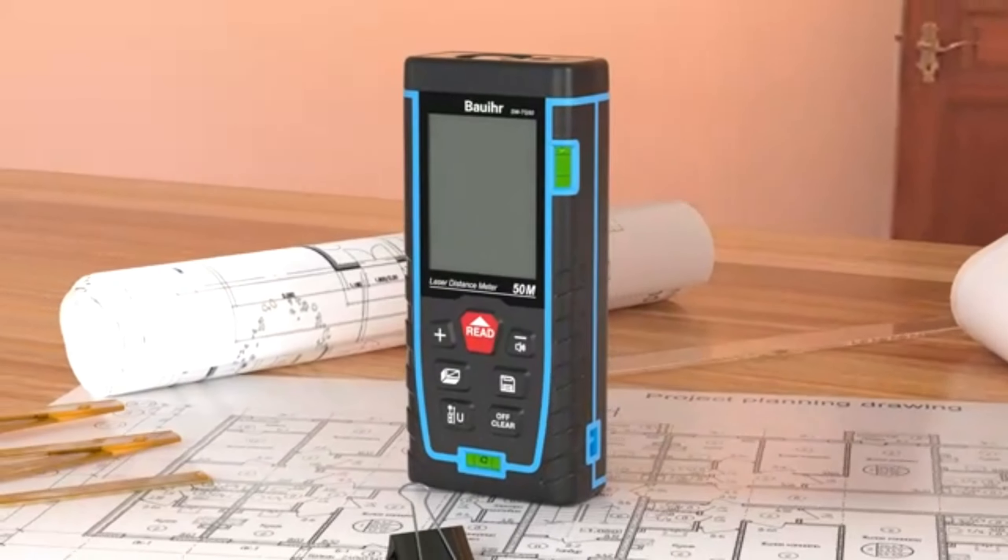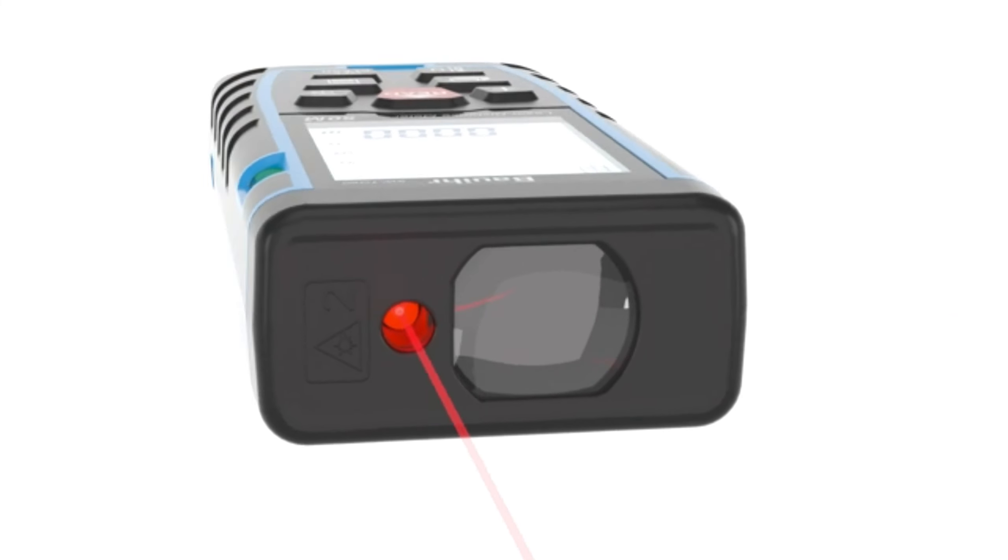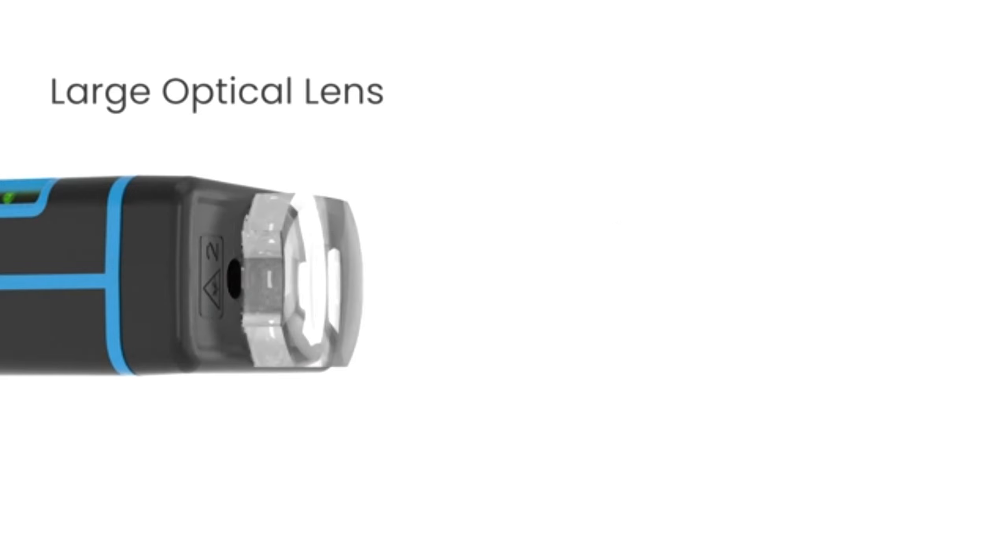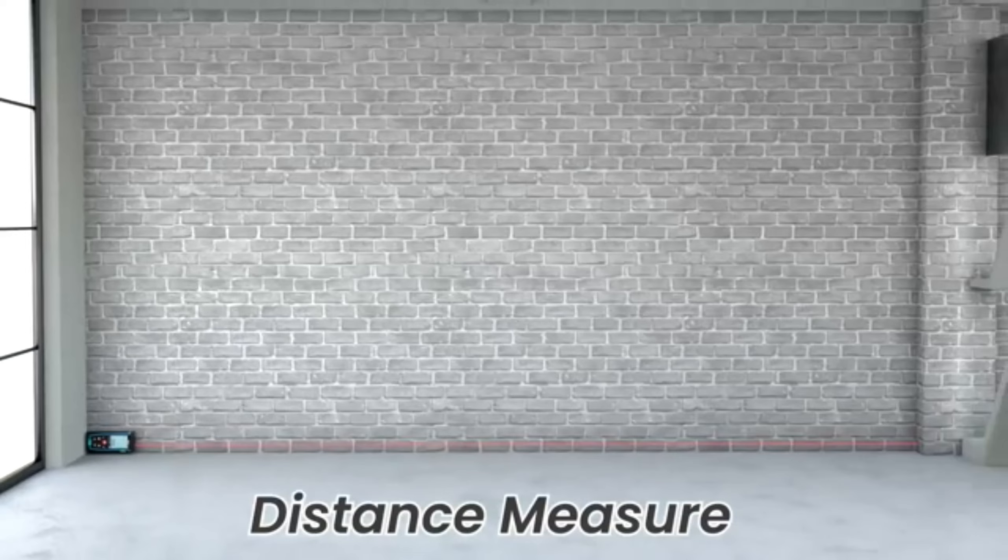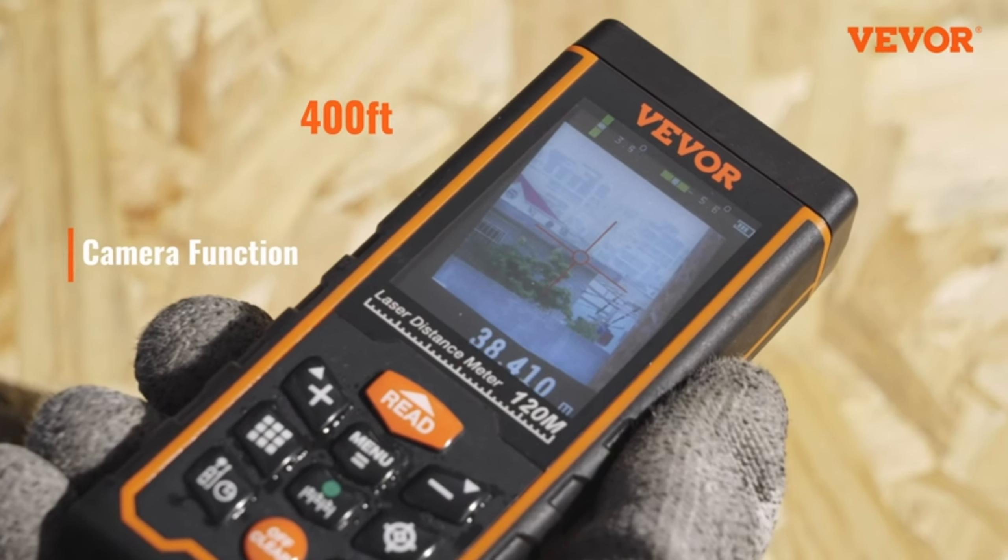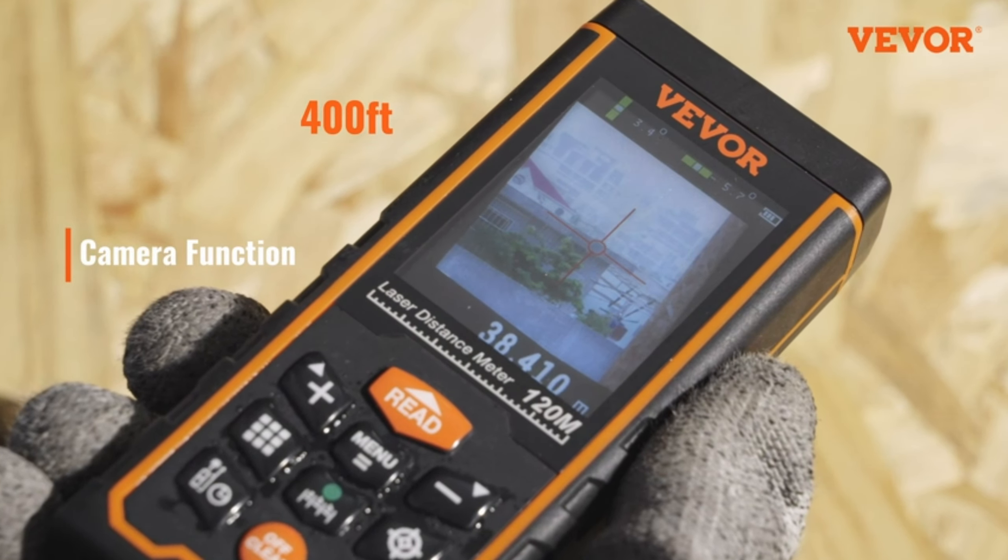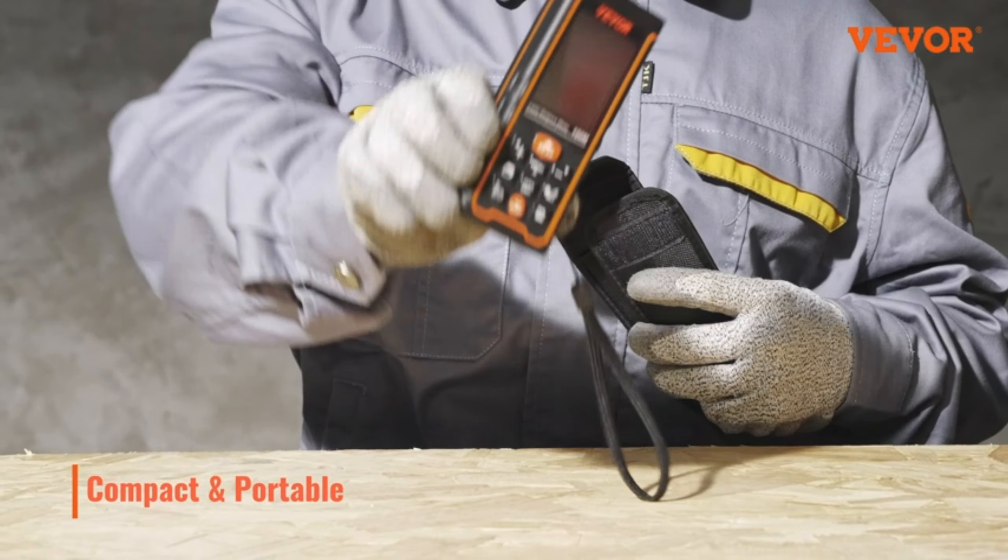Now, for all the DIYers and home improvement buffs out there, the MiZor Digital Measuring Tool is a must-have. This 6-in-1 multifunction laser measure is a game changer for accurate measurements. Whether you're a professional contractor or a weekend warrior, this gadget is sure to make your life easier.